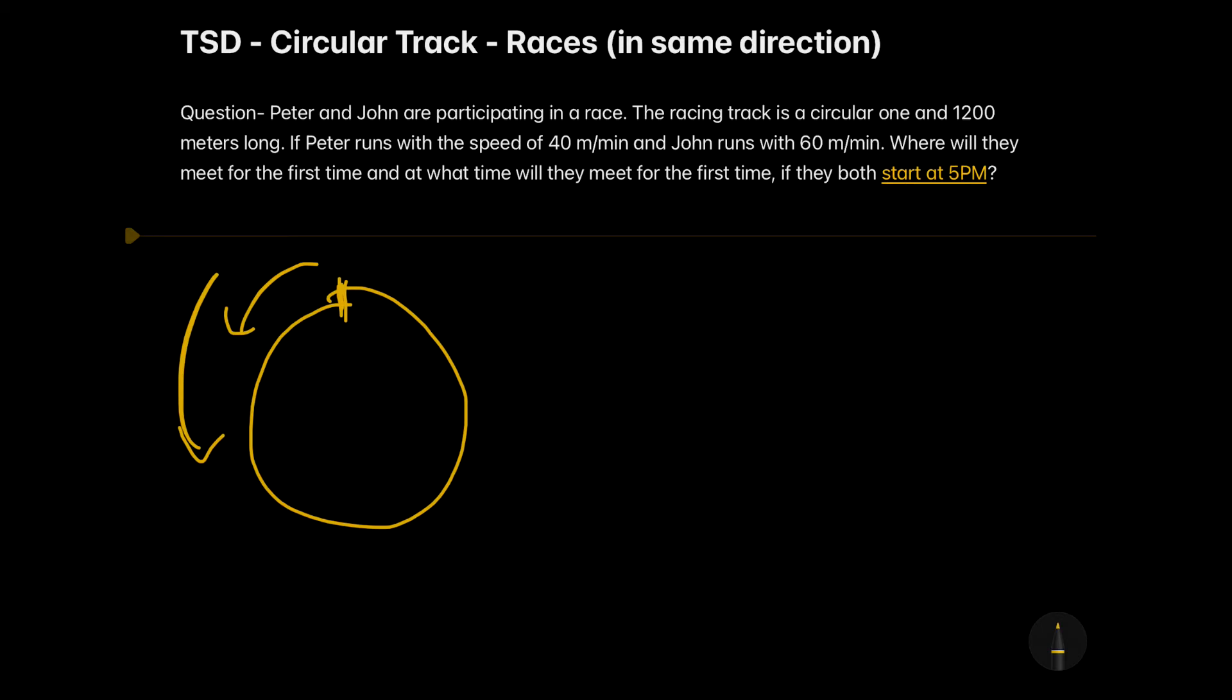Always remember that two people running in the same direction will meet only at the starting point and the starting point would be after completing few laps. It will not be happening in the very first lap because of course if two people meet at the same time in the first lap only at the starting point, this actually means that both of them are running in the same direction and with the same speed and then there is no point of any question itself.